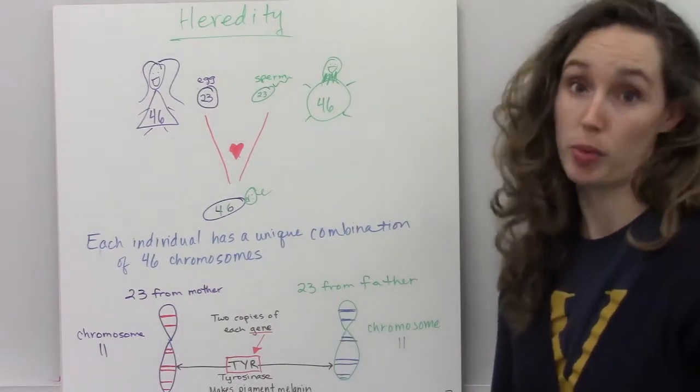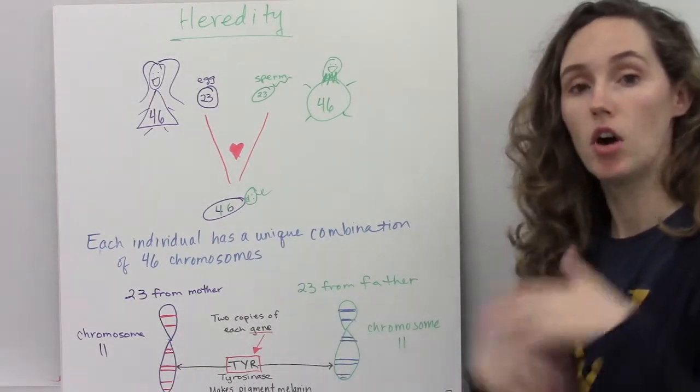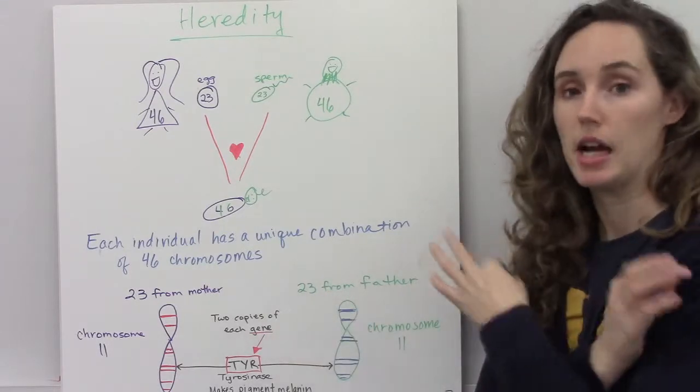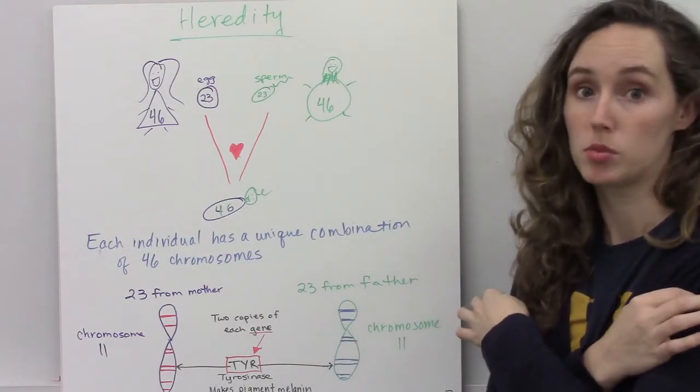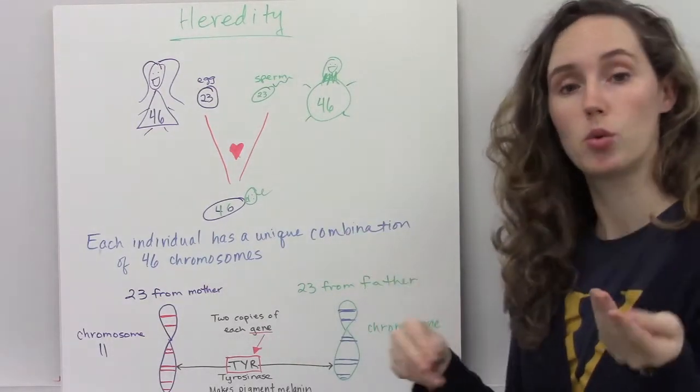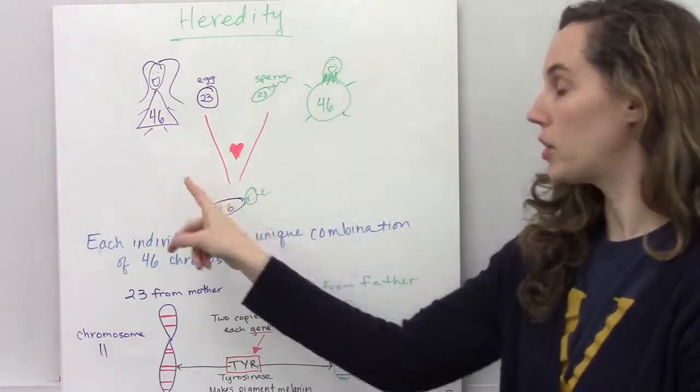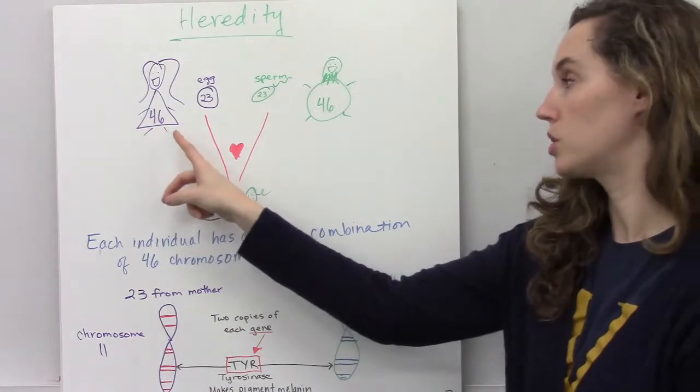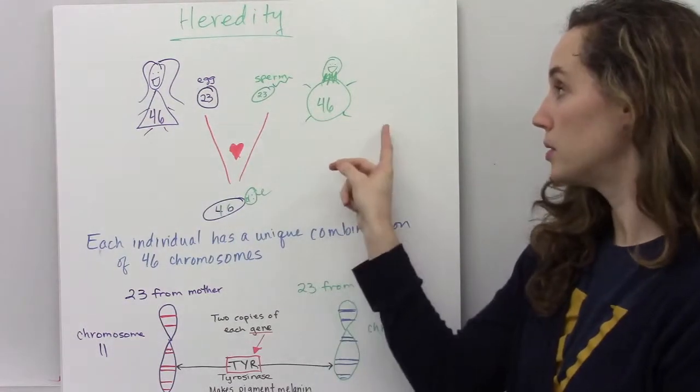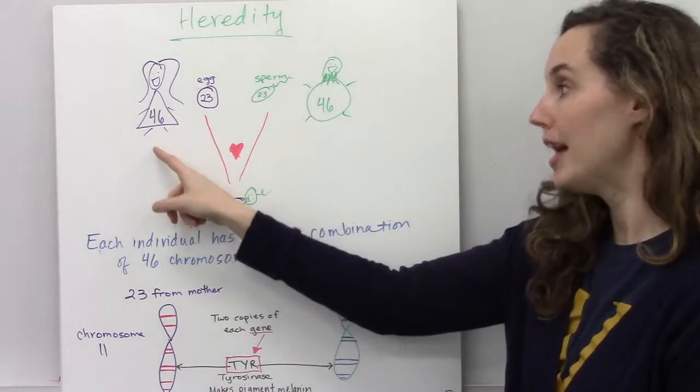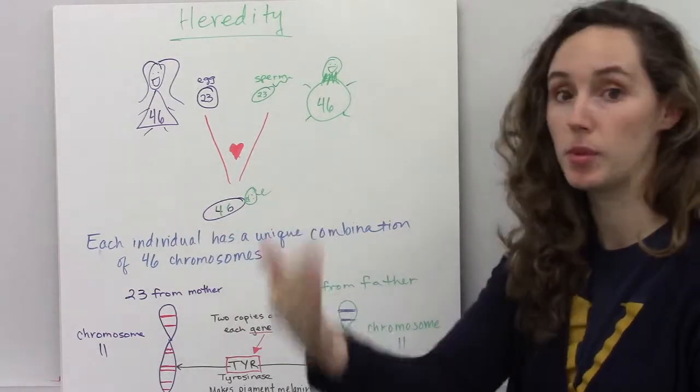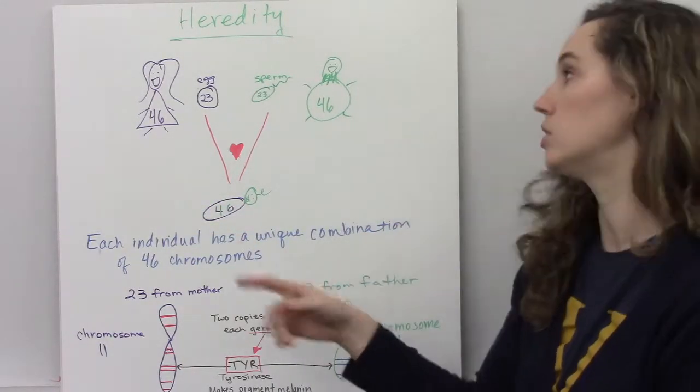Heredity begins with your parents. In all human cells, we have 46 chromosomes. We got 23 from our mom and 23 from our dad. So this is the mother, and she has 46 chromosomes, and so does the father.